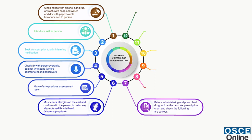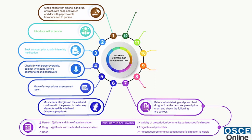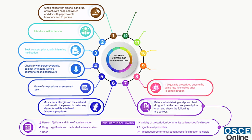7. Before administering and prescribing drug, look at the person's prescription chart and check that the following are correct: person, drug, dose, date and time of administration, route and method of administration. Ensure the following: validity of prescription, community patient specific direction, signature of prescriber, and that the prescription or community patient specific direction is legible.